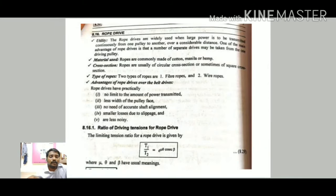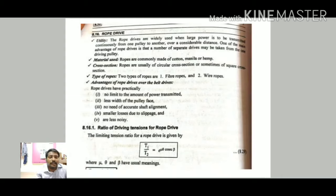The rope drive is widely used for large power transmission and can transmit power continuously from one pulley to another over considerable distances. A key advantage is that multiple separate drives may be taken from one driving pulley. Materials used in rope drives include cotton and hemp, with a square cross-section. There are two types of ropes: fiber ropes and wire ropes. The ratio of driving tension is T1/T2 = e^(μ cosec β), with μ, θ, and β defined the same as for the V-belt.